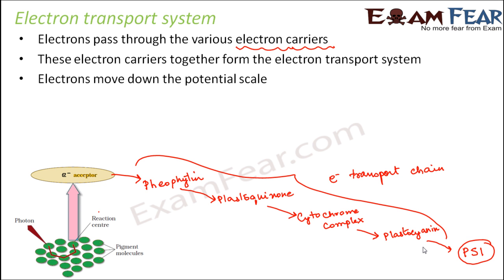Why do the electrons move from one molecule to the other? The electrons are actually moving down the potential scale. A general tendency is that every molecule will tend to move from a region of higher potential towards a region of lower potential. Here, if you look at the energy levels of the electrons, they were in the ground state when with PS2. When too much energy was absorbed from sunlight, the electrons got excited and reached higher energy levels. When electrons are in higher energy levels, they are less stable.